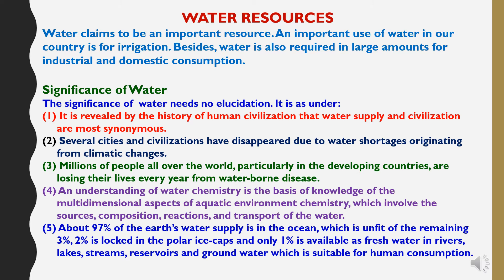Fifth, about 97% of the earth's water supply is in the oceans, which is unfit for use. Of the remaining 3%, 2% is locked in the polar ice caps, and only 1% is available as fresh water in rivers, lakes, streams, reservoirs and groundwater, which is suitable for human consumption.